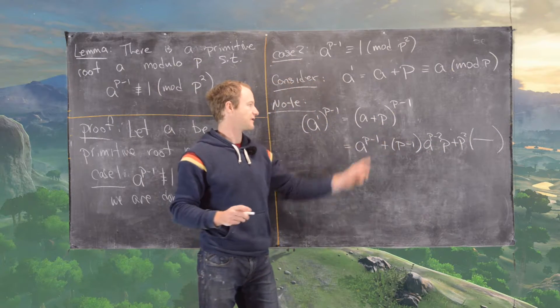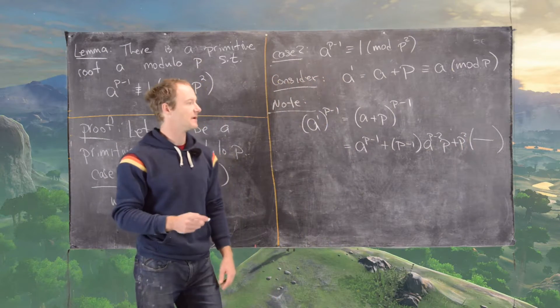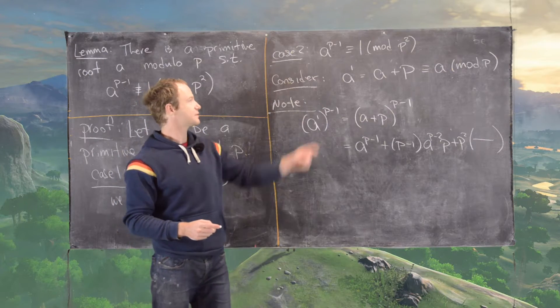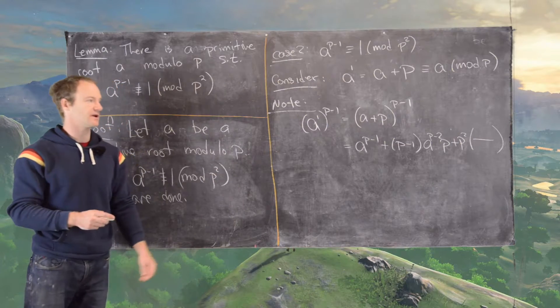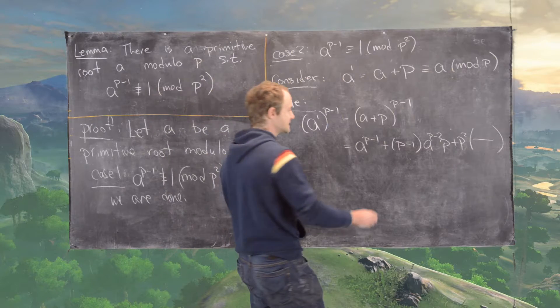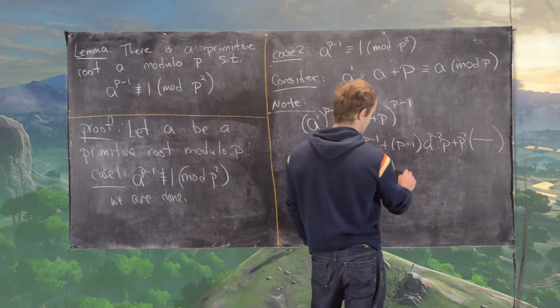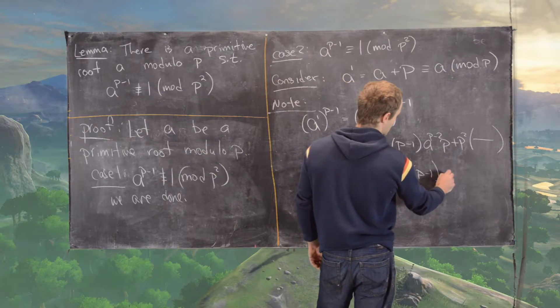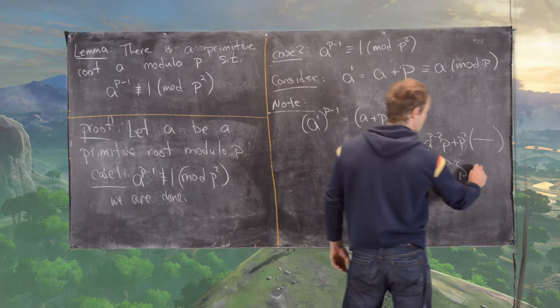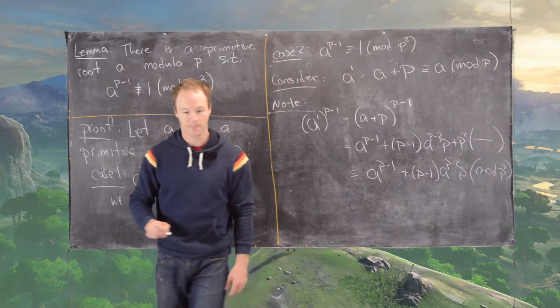So notice we're writing this in increasing powers of p, which is the second variable of this binomial. So here we have p to the zero, here we have p to the one, and everything else is going to be in terms of p squared or higher. But since we're going to be working modulo p squared, that's okay and we don't need to worry about that. So now the next thing we want to notice is that this is congruent to a to the p minus one plus p minus one a to the p minus two times p modulo p squared.